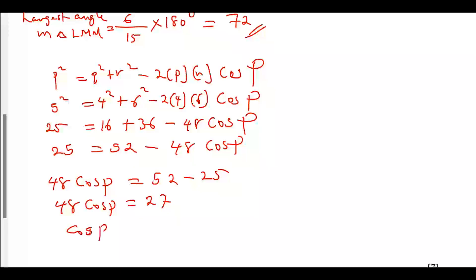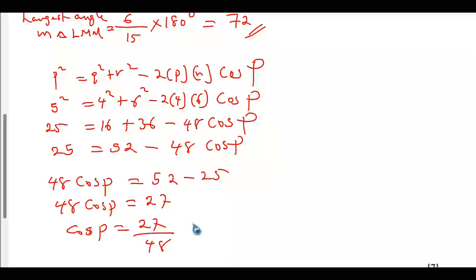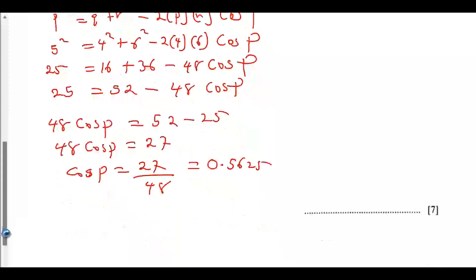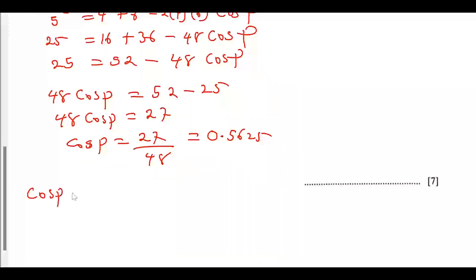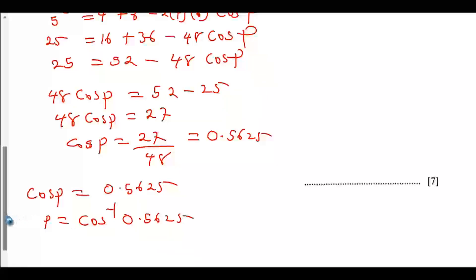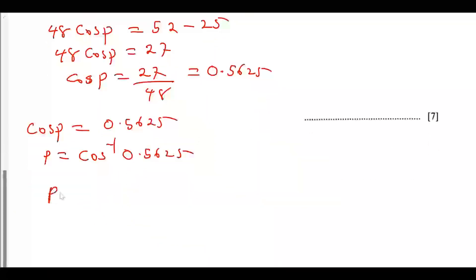So cos P equals 27 over 48. This gives the decimal 0.5625. Let me rewrite: cos P equals 0.5625.